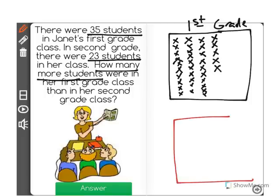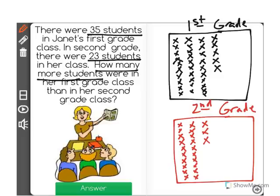Now her second grade class had a total of 23 students. So I'm going to go ahead and draw an X for each of those 23 students. Now we can see we have 23 X's for the 23 students.